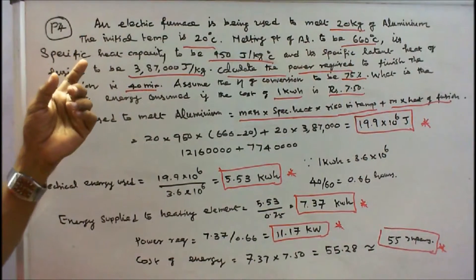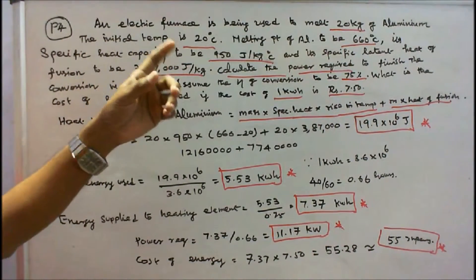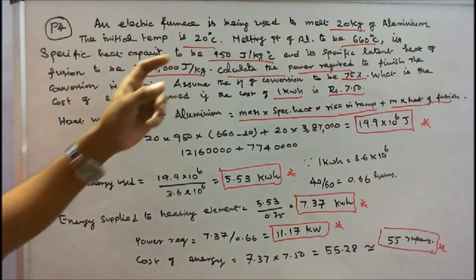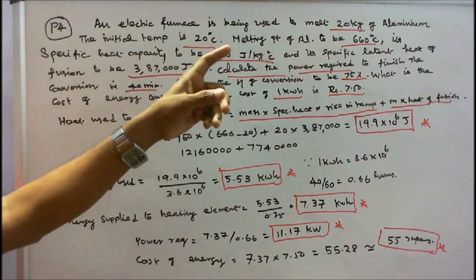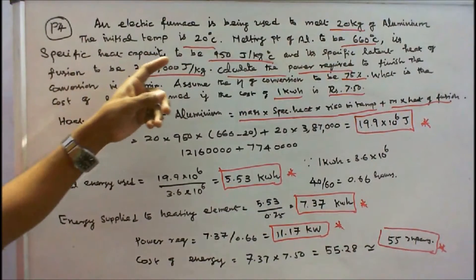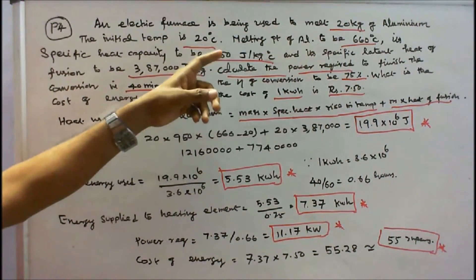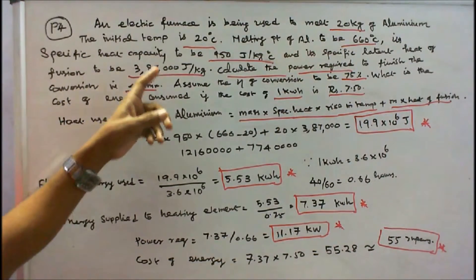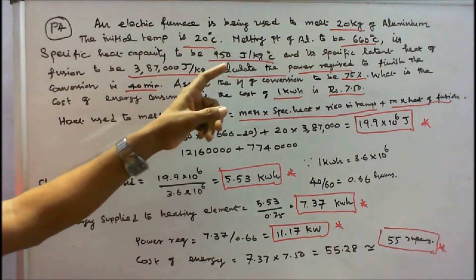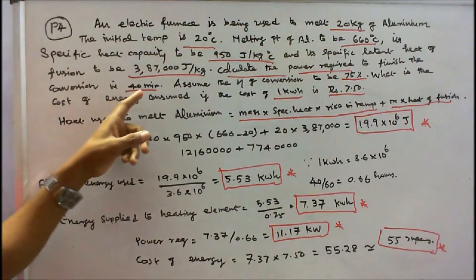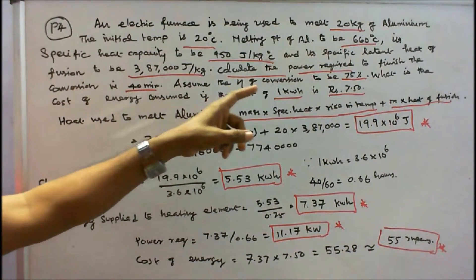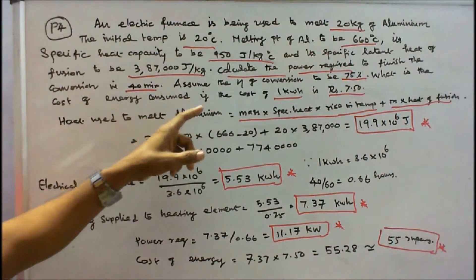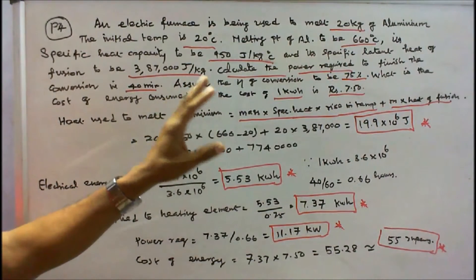Problem 4: An electric furnace is used to melt 20 kg of aluminium. The initial temperature is 20°C, melting point of aluminium is 660°C, specific heat capacity is 950 J/kg°C, and specific latent heat of fusion is 387,000 J/kg. Calculate the power required to finish the conversion in 40 minutes, assuming efficiency of 75%. Also find the cost of energy if 1 kWh costs Rs. 7.50.